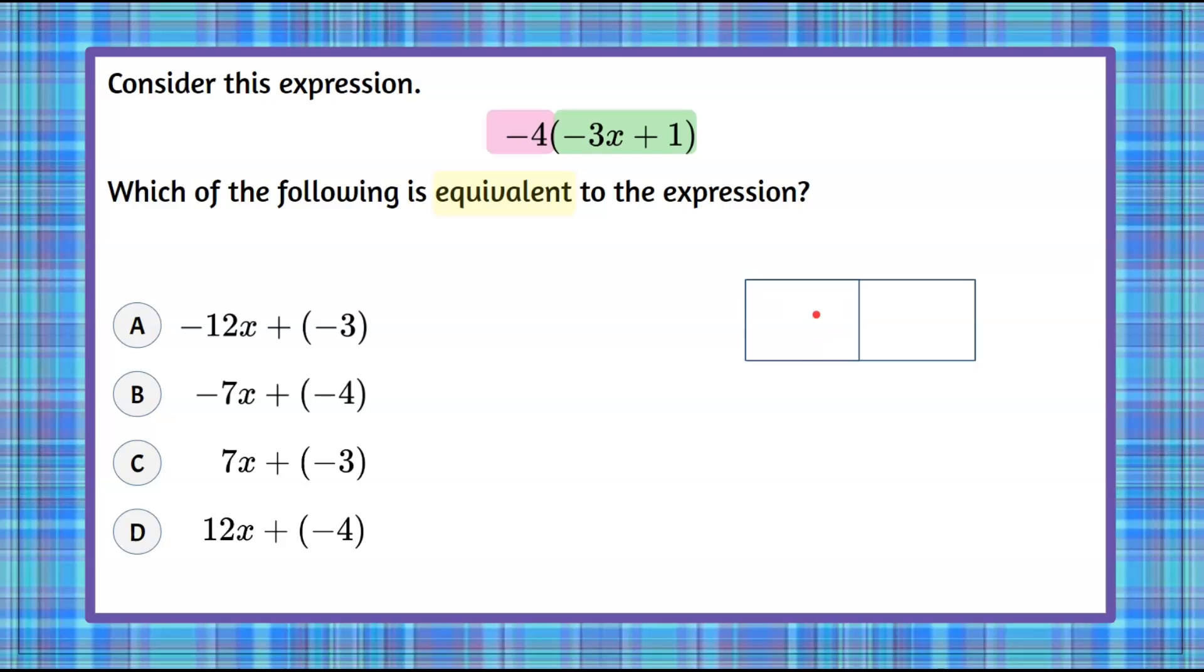So we're going to find the area of this half, the area of this half, and then add them together. So we're going to take our negative 4 and we're going to multiply it by our expression. So here our factor negative 4 goes in and then our second term has a factor of negative 3x and a positive 1.